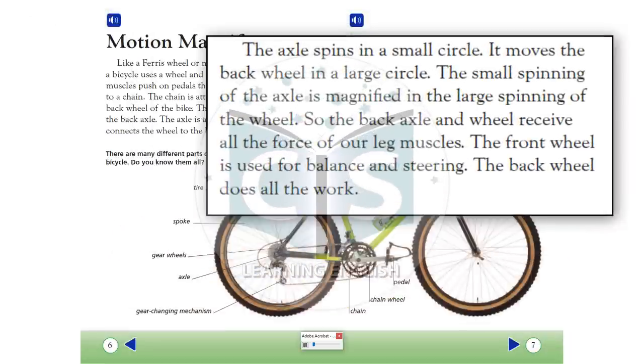The axle spins in a small circle. It moves the back wheel in a large circle. The small spinning of the axle is magnified in the large spinning of the wheel. So the back axle and wheel receive all the force of our leg muscles. The front wheel is used for balance and steering. The back wheel does all the work.